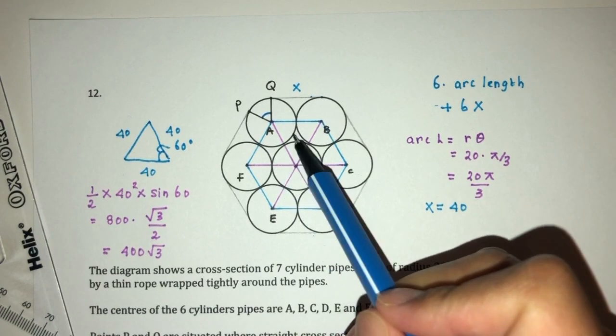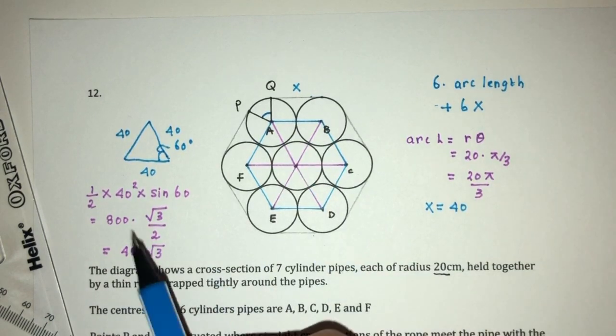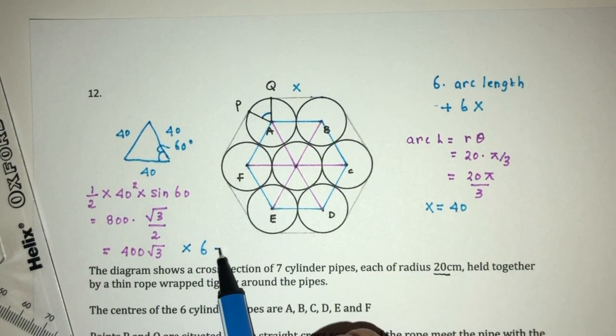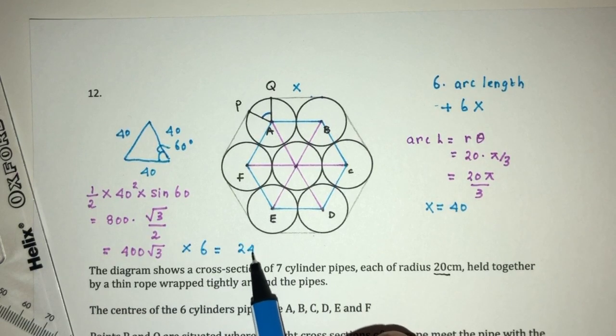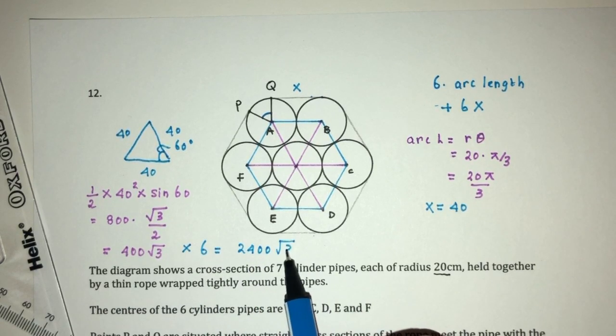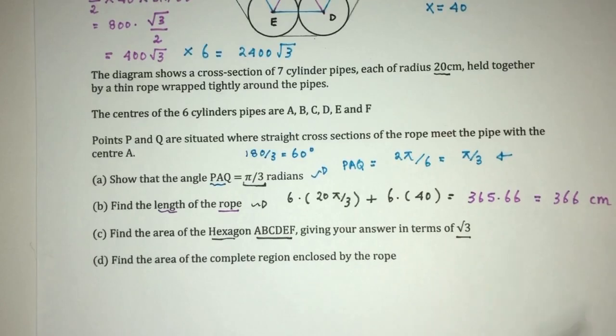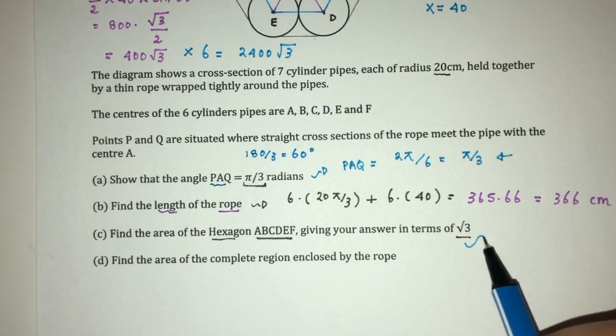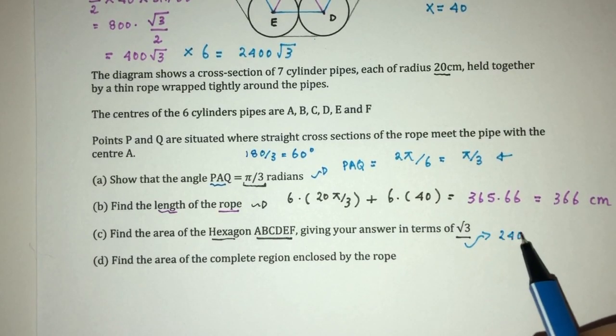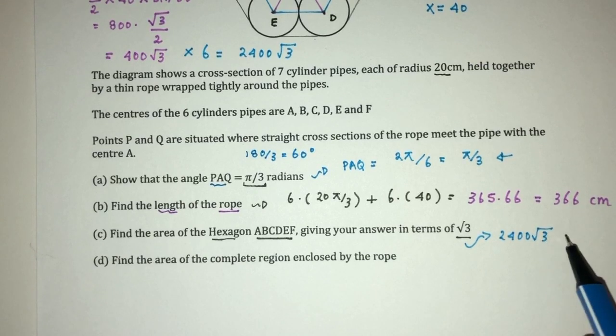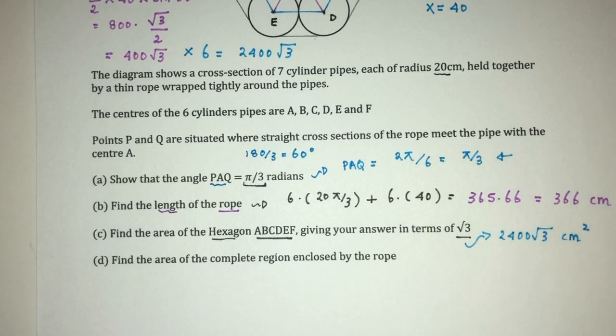Now, you have to find how many. We have 1, 2, 3, 4, 5, 6. So, times 6 for the whole area. That will be 2,400 root 3 for the value here. So, that will be, in terms of root 3, 2,400 root 3 centimeters squared for the area.